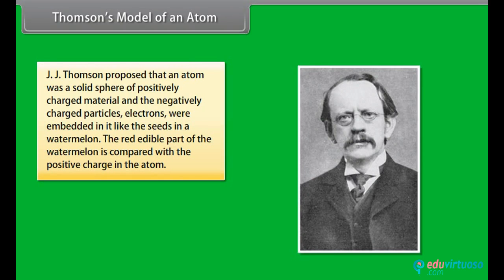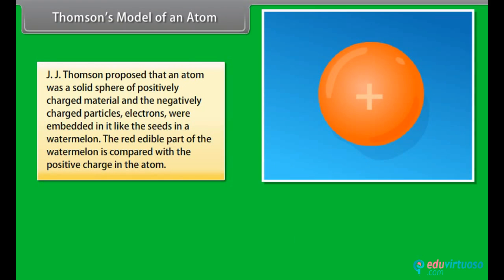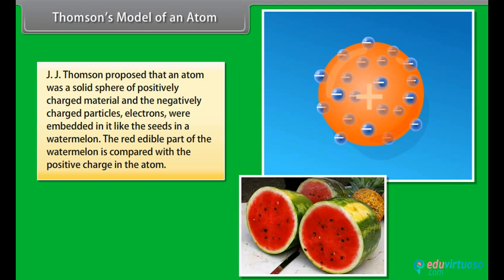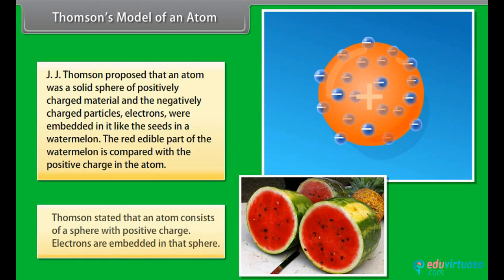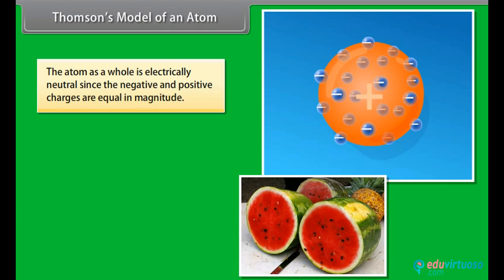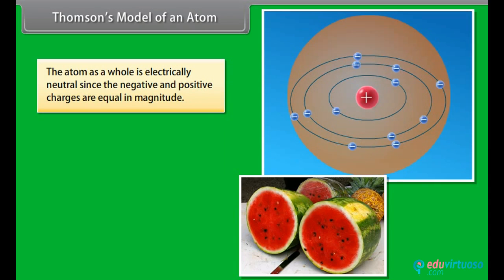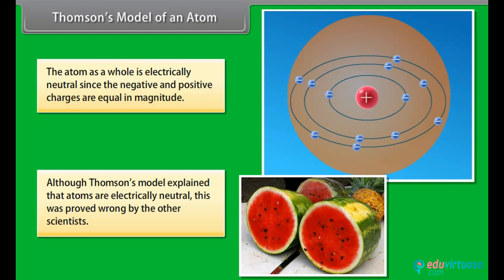Thomson's Model of an Atom. J.J. Thomson proposed that an atom was a solid sphere of positively charged material and the negatively charged particles, electrons, were embedded in it like the seeds in a watermelon. The red edible part of the watermelon is compared with the positive charge in the atom. Thomson stated that an atom consists of a sphere with positive charge. Electrons are embedded in that sphere. The atom as a whole is electrically neutral since the negative and positive charges are equal in magnitude. Although Thomson's model explained that atoms are electrically neutral, this was proved wrong by the other scientists.